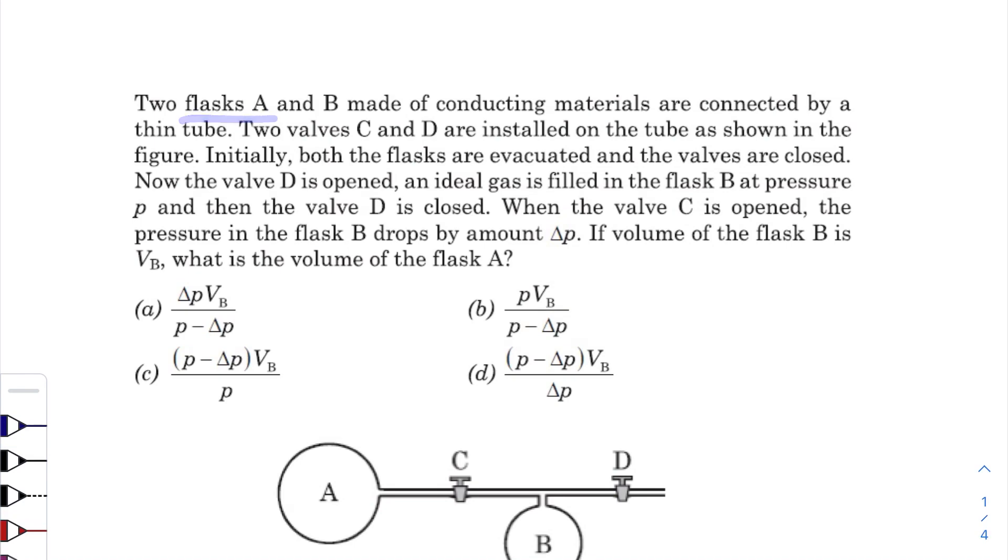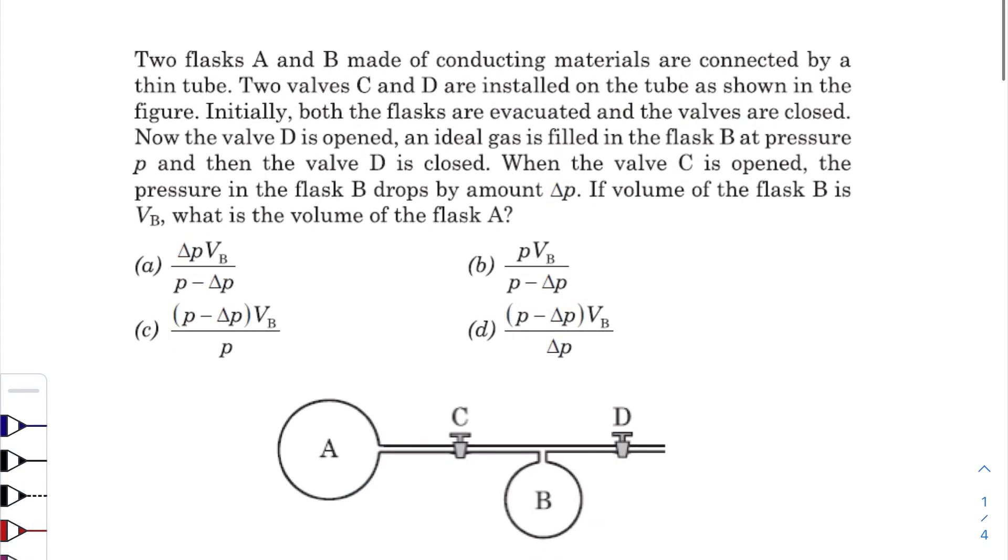The flasks are connected by a thin tube. Two valves C and D are installed on the tube as shown in the figure. Initially, both flasks are evacuated and the valves are closed. Now the valve D is opened, so first this one is opened, and ideal gas is filled in flask B at pressure P. Then valve D is closed.